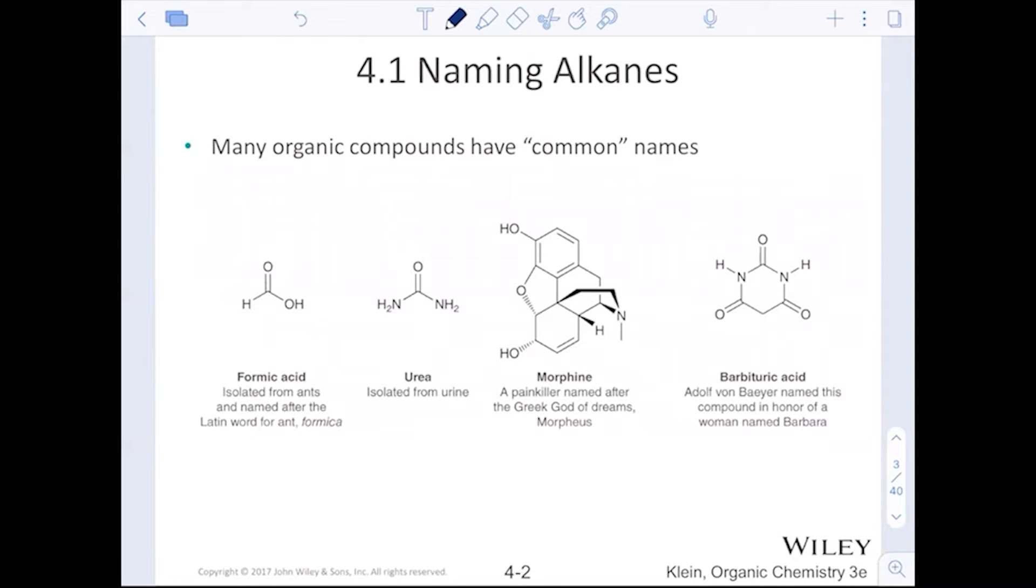Morphine, I love the explanation for morphine here. Morphine, the painkillers named after the Greek god of dreams, Morpheus. So we can start to see how the influence is either historical or Latin. Barbituric acid was named after the guy's wife. Like how cool is that? Very, very romantic to name a compound after your loved one.